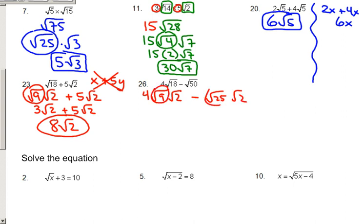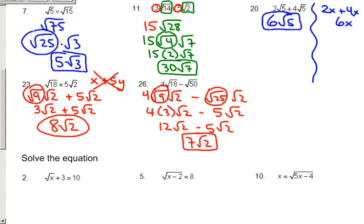If I can root 9, I can root 25. It gives me 4 times 3 square root of 2 minus 5 square root 2. These two numbers multiply to 12 root 2 minus 5 root 2, which becomes 7 root 2. Final.